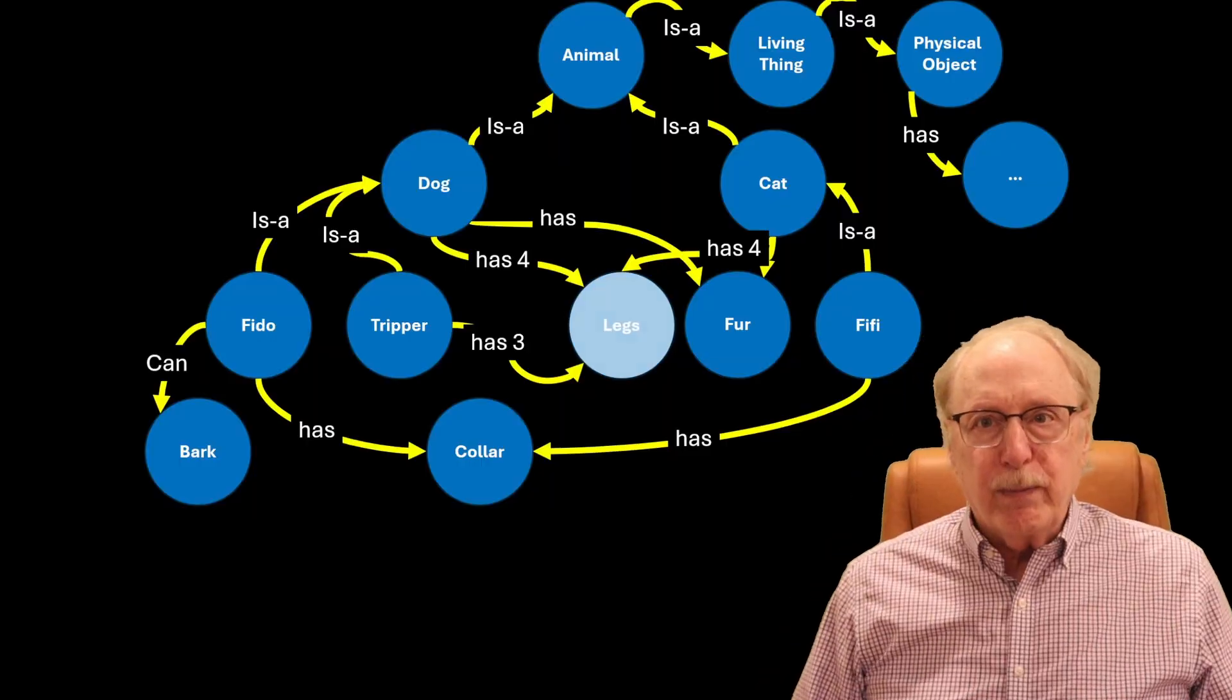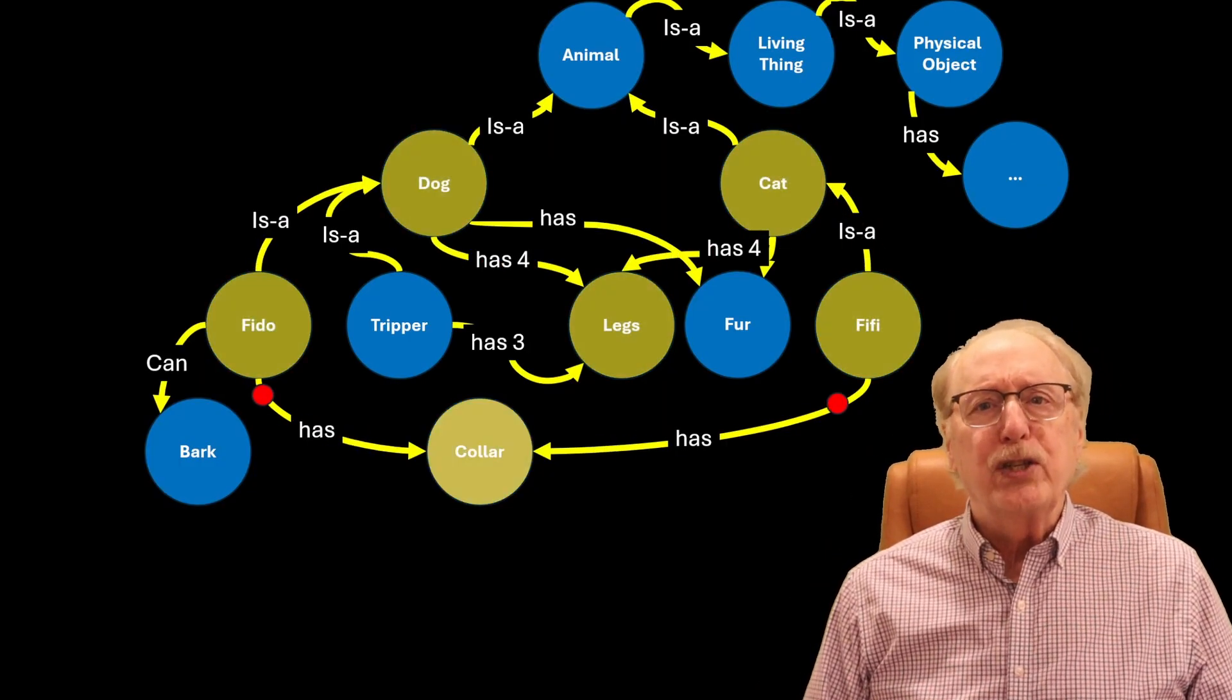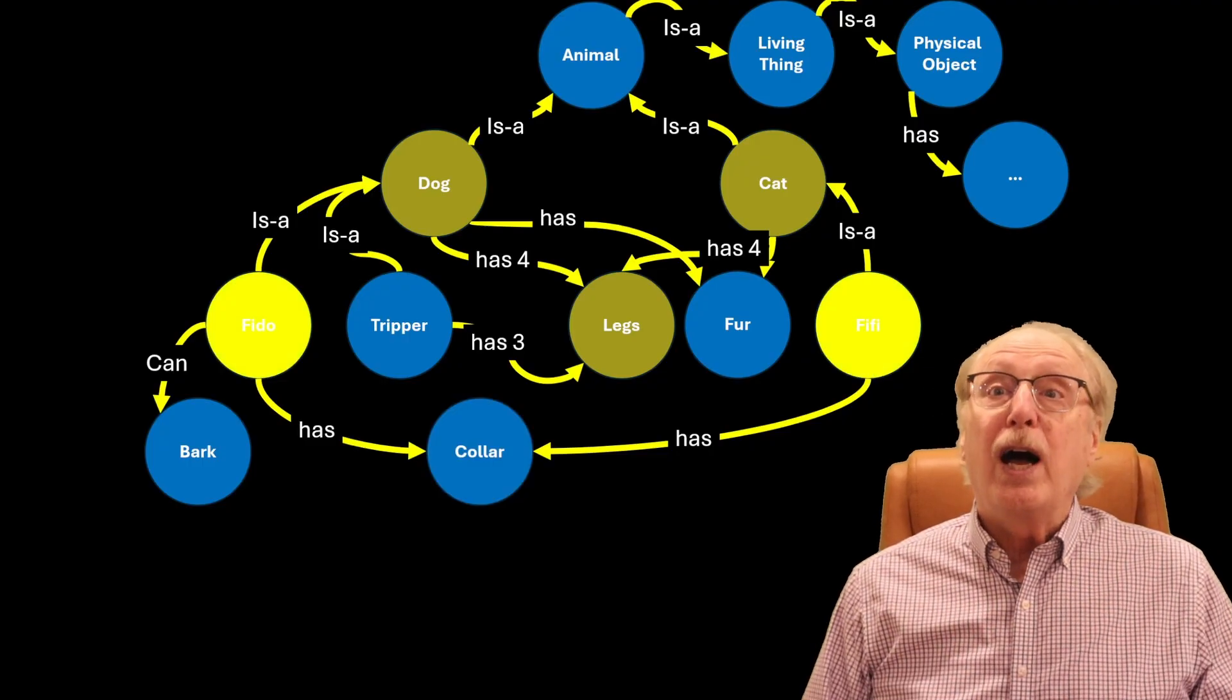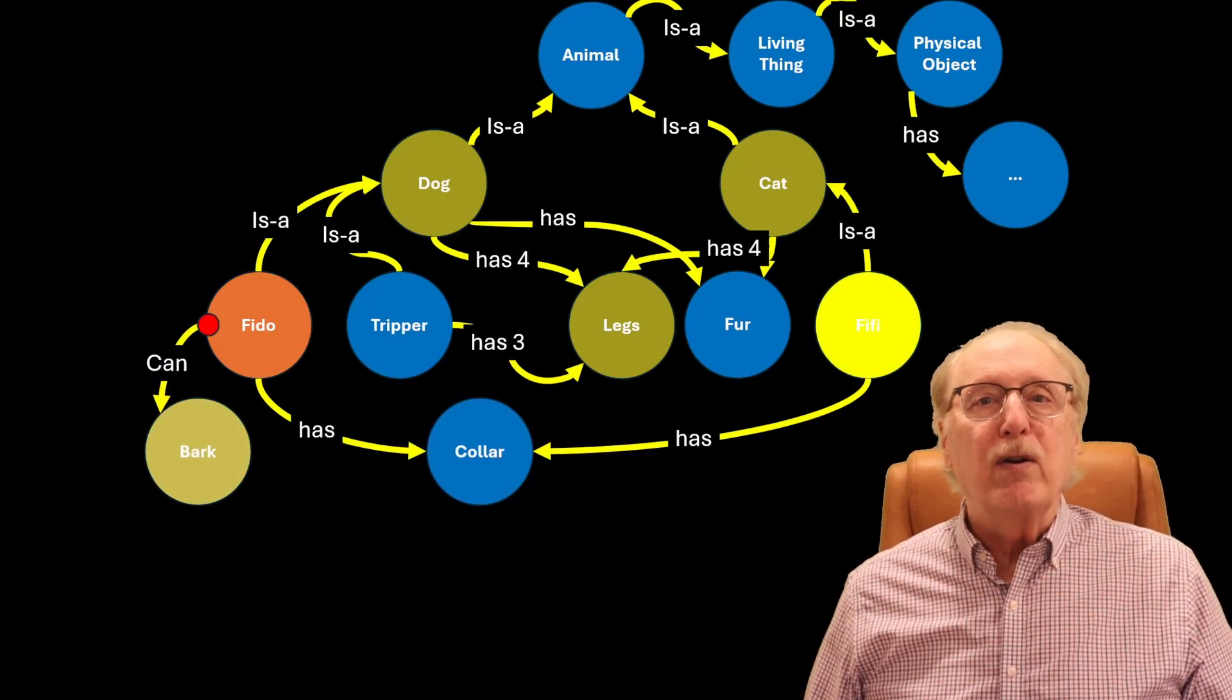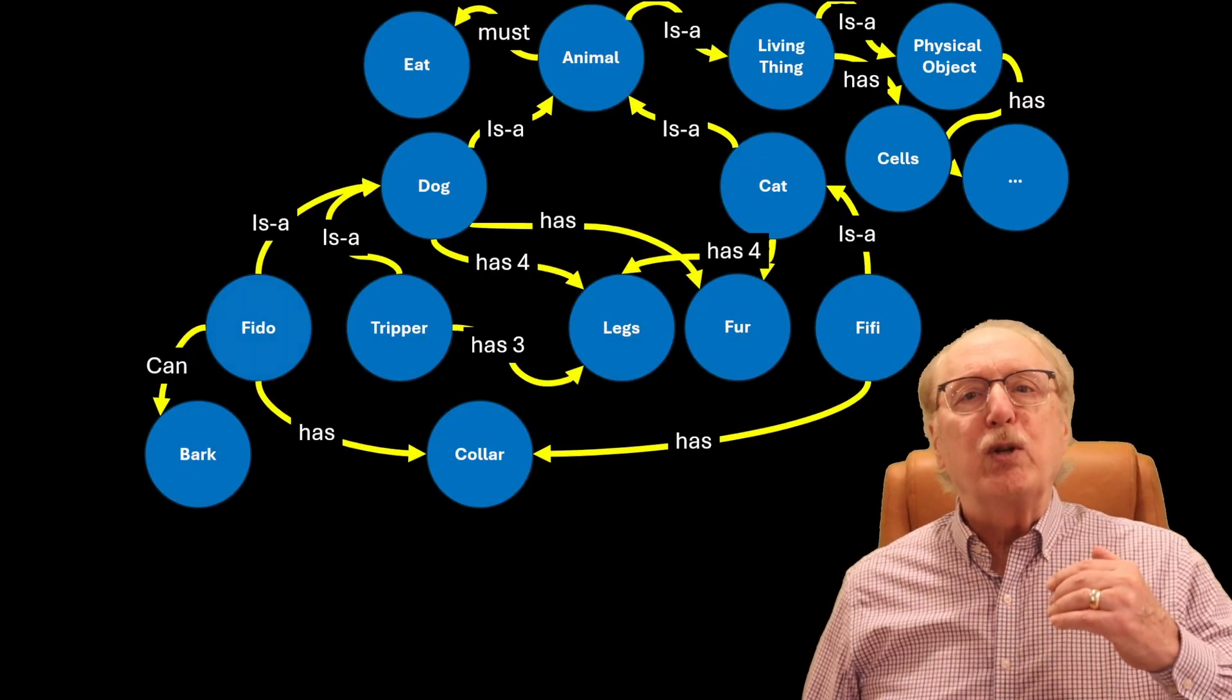Your brain stores information in a graph, a vast tangled web of nodes connected by relationships. Each node is a concept like dog or Fido, or the shape of an object. Each relationship captures a meaning.